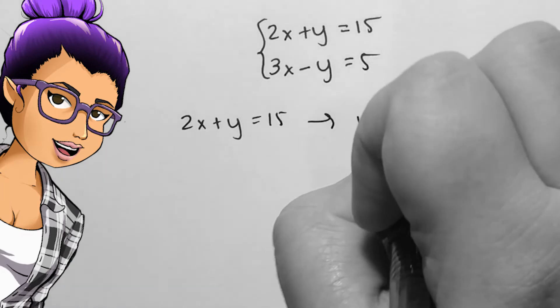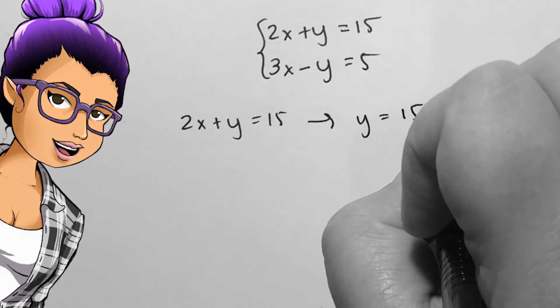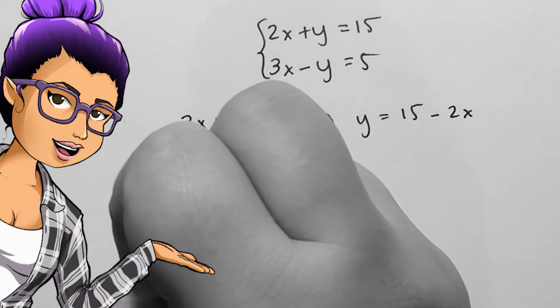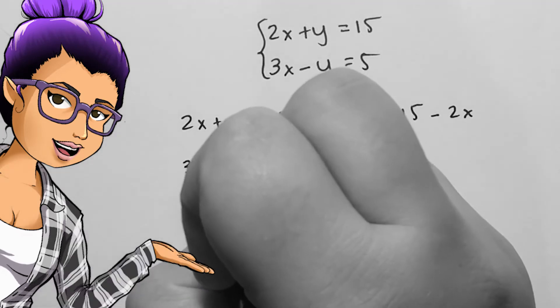In the top equation, let's solve for the variable y in terms of x, meaning we will get y equals stuff with x. So I should get y equals 15 minus 2x.